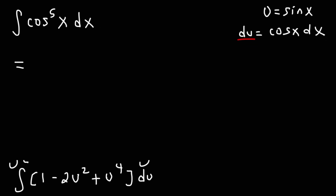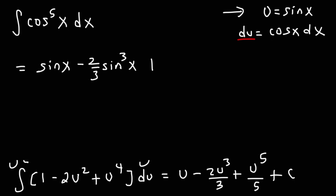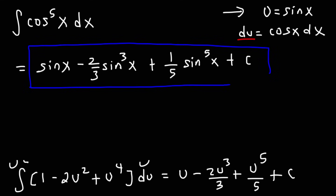Now let's find the antiderivative of this expression using the power rule: u minus 2u to the third over 3 plus u to the fifth over 5, plus c. Now we replace u with sine. So the final answer is sine x minus 2/3 sine to the third power of x plus 1/5 sine to the fifth power of x plus c. This is the indefinite integral of cosine x raised to the fifth power.